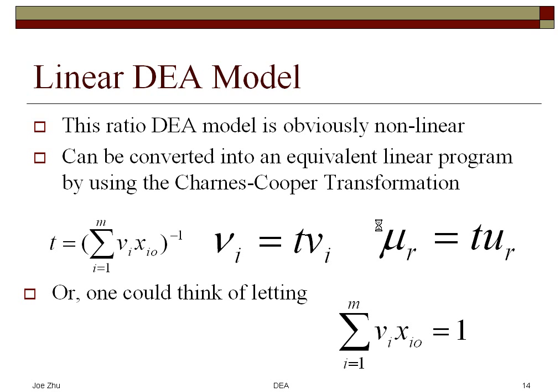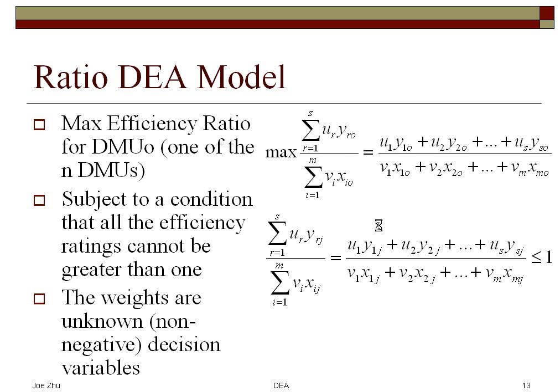Now this model is obviously non-linear. If you look at the objective, it's non-linear. For the restrictions, you can actually convert that into linear equalities. Just multiply both sides by the sum of VI times Xij. If you just move that over, so you will have the weighted sum of outputs less than or equal to the weighted sum of inputs. But the objective function is non-linear.